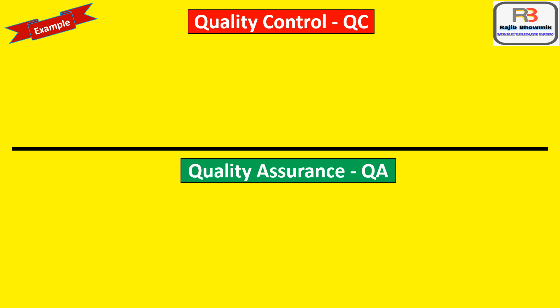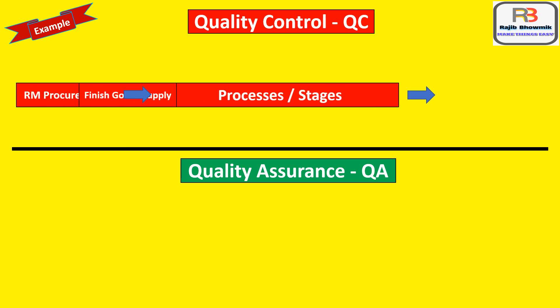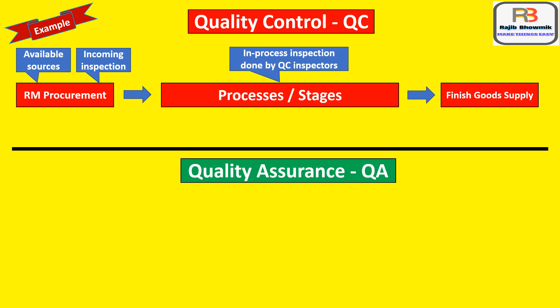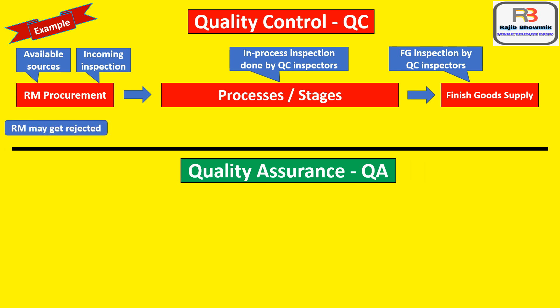I will start with an example. We will see the difference between quality control and quality assurance. In any industry, there are three portions: raw material procurement, various processes or stages, and then finished goods supply. In a quality control scenario, raw materials are procured from available sources and incoming inspection is done by QC inspectors. In-process inspection is also done by QC inspectors. Raw material may get rejected after receiving, which may cause delay in production.